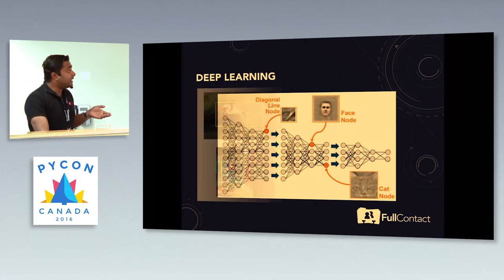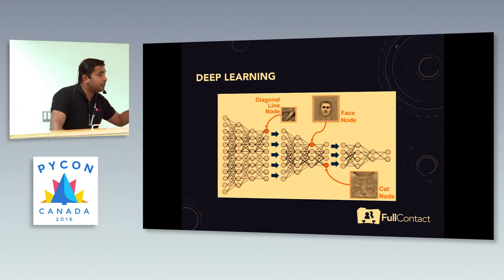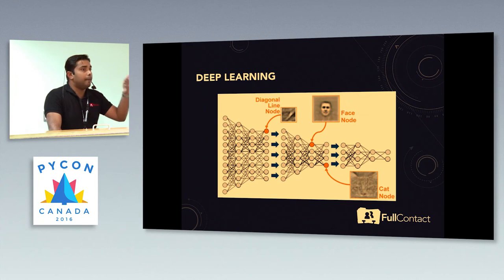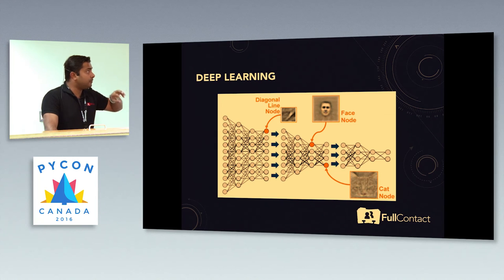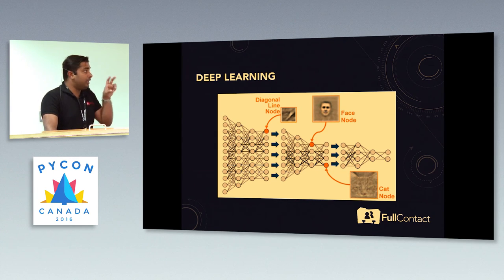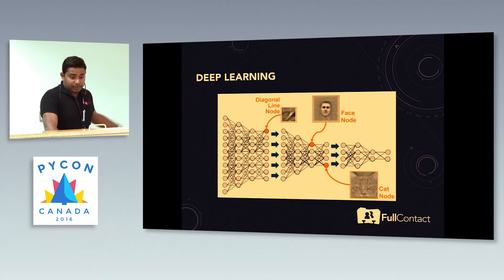This is another example where neural networks with multiple layers of weight matrices — sets of neurons or single neurons — can actually identify a face or a cat. As you can see, one of those nodes can identify a face, the other can identify a cat. That's how deep learning actually works.